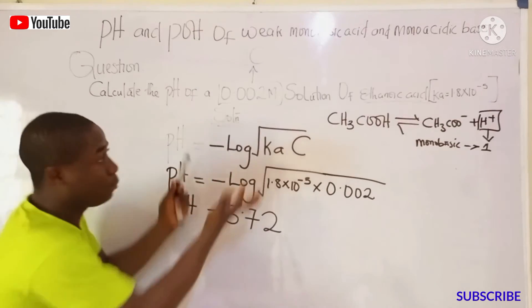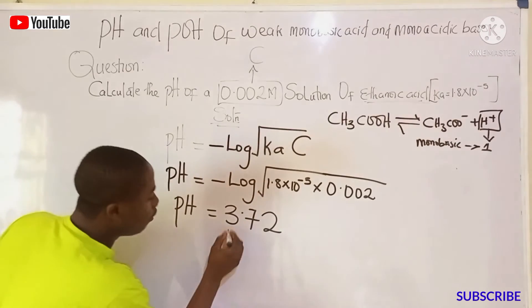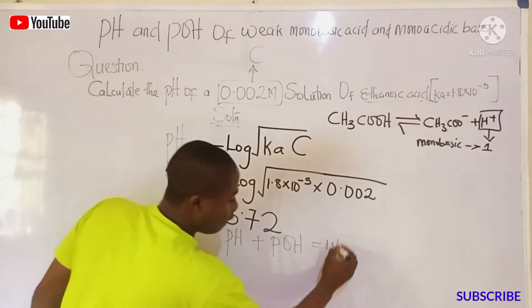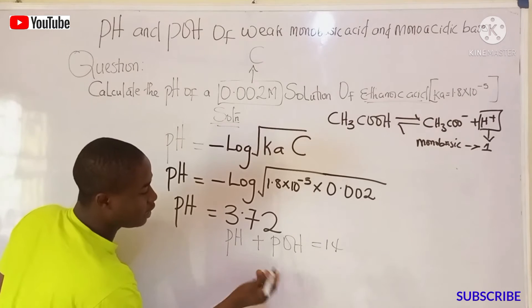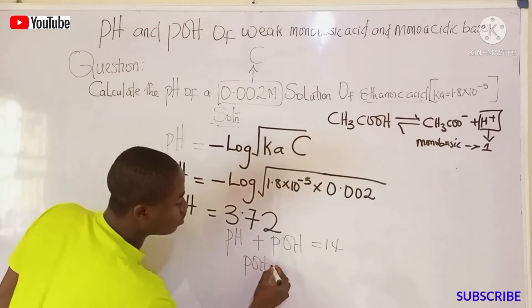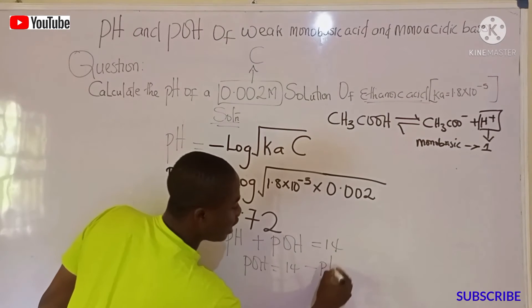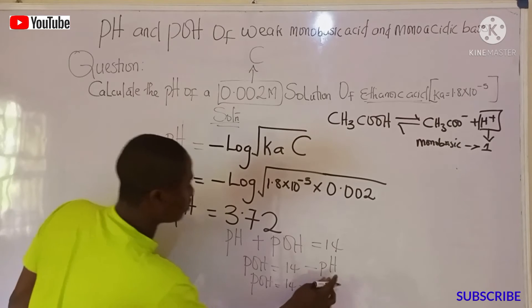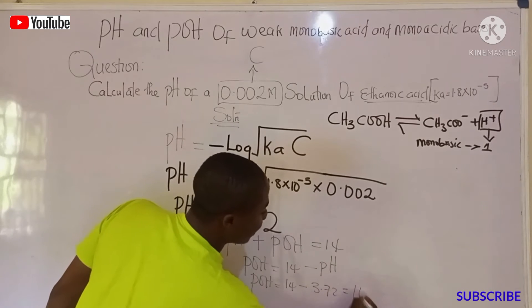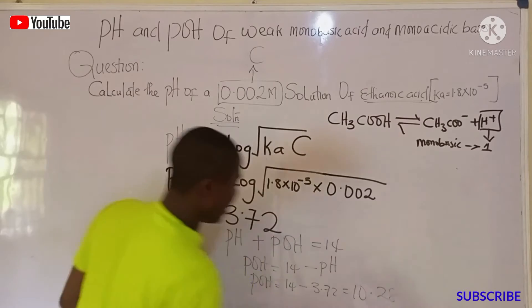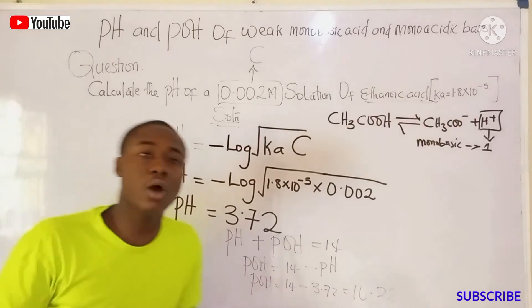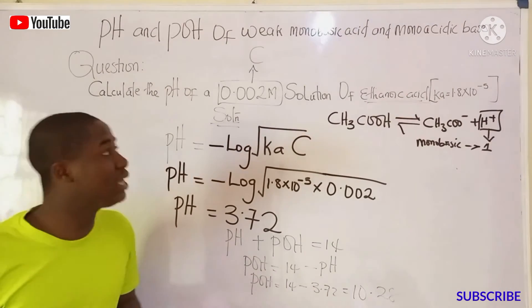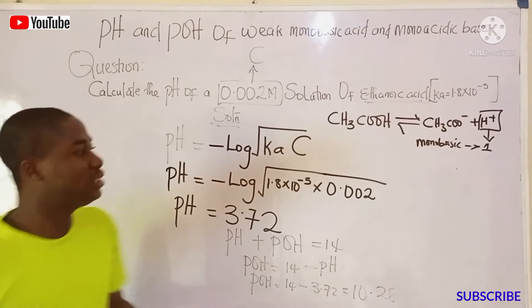If they also ask us to get the pOH of this same solution, we use: pH + pOH = 14. Making pOH the subject gives: pOH = 14 - pH = 14 - 3.72 = 10.28. So the pOH of the ethanoic acid solution is 10.28.